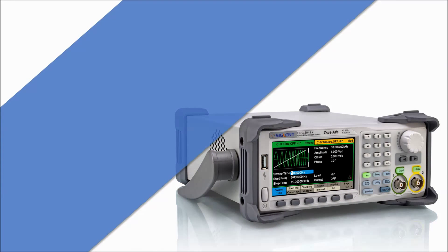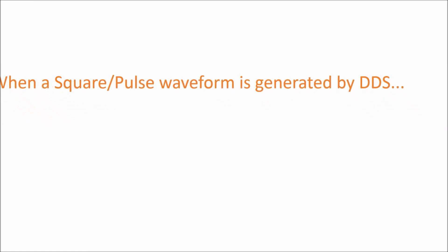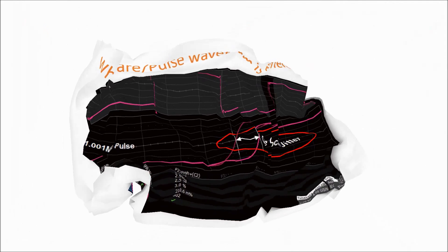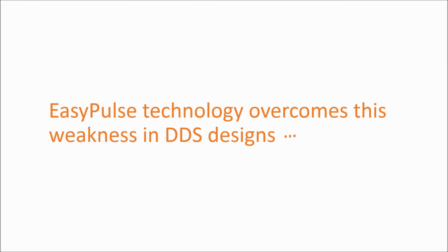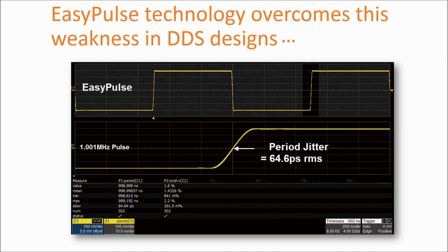The SDG2000X uses Siglent's innovative EasyPulse technology. When a square pulse waveform is generated by a DDS, there will be one clock jitter if the sampling rate is not an integer-related multiple of the output frequency. EasyPulse technology successfully overcomes this weakness in traditional DDS designs and helps produce low jitter square pulse waveforms.